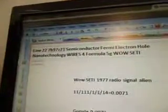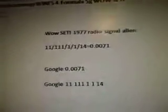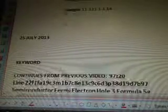Semiconductor Fermi Electron Hole Nanotechnology Wires 4 Formula, 5G Well Study. There's the alien radio signal with its equation, July 25, 2013. And this is a continuation of the Nanotechnology Wires, Take Signals, Semiconductor Fermi Level in Electron Holes, Neutrinal Particle Mixtures Formula 4 for a UFO Space Communication Ship, found in the WOW Data Lines 22.